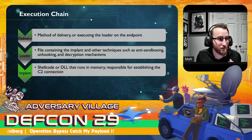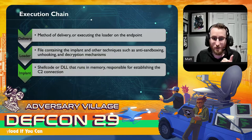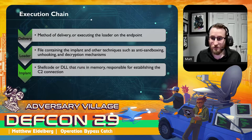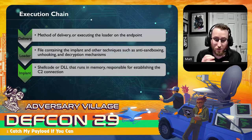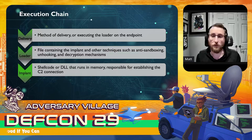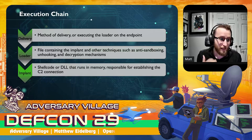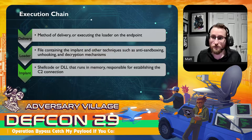The example I like to use defines three things: the delivery, the loader, and the implant. The delivery is the mechanism to get your loader onto the box — most commonly things like MSHTA, bitsadmin, anything that allows you to download or pull from a remote or local resource. The loader — whether a binary, DLL, or Jscript file — contains your implant plus techniques like anti-sandboxing, DLL unhooking, or decryption. The implant is the shellcode or, in Cobalt Strike's case, the reflective DLL that runs in memory and establishes that remote connection.